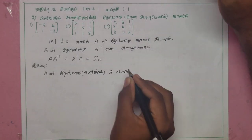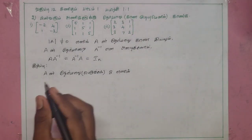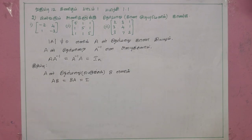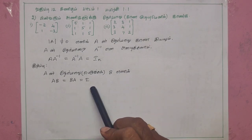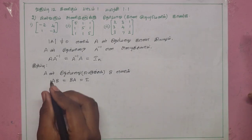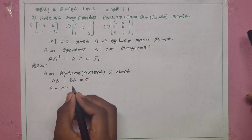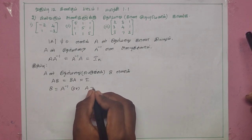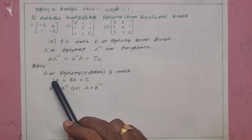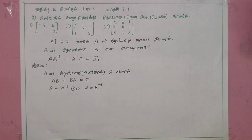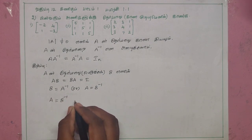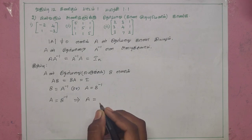If the inverse of A is B, then AB equals BA equals I. Therefore b is equal to A inverse, and b is equal to A inverse of inverse. A is equal to A inverse of inverse.